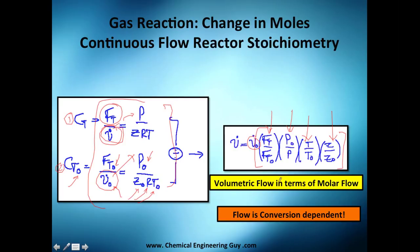We have volumetric flow in terms of molar flow. The important point is that the flow is conversion-dependent — the flow of any species j is a function of the conversion X_A. As you get more conversion you're going to get different flows. So let's try to force conversion into this equation.